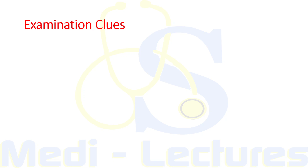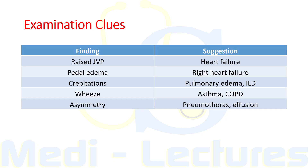Examination in a dyspnea patient is also very helpful. We have to do head-to-toe examination. Raised JVP and pedal edema are suggestive of heart failure — pedal edema specifically of right heart failure. Crepitations can be heard in pulmonary edema due to heart failure, and fine inspiratory crackles in interstitial lung disease. Wheezes can be heard in asthma and COPD, and also in congestive heart failure — termed cardiac wheezes. Asymmetry of the chest can be seen with pneumothorax and pleural effusion.